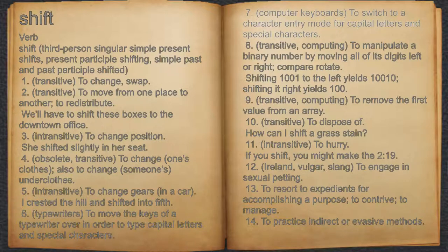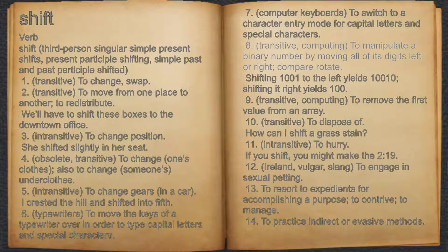7. Computer keyboards. To switch to a character entry mode for capital letters and special characters. 8. Transitive. Computing. To manipulate a binary number by moving all of its digits left or right. Compare rotate. For example, shifting 1001 to the left yields 10,010. Shifting it right yields 100.